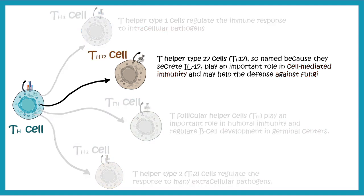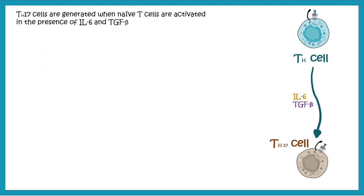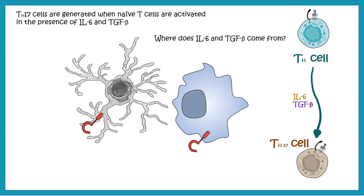Our discussion today is on TH17 cells and their function. T helper cells get differentiated into TH17 cells with the help of the cytokines IL-6 and TGF-beta. These cytokines are actually derived from antigen presenting cells such as macrophages and dendritic cells.